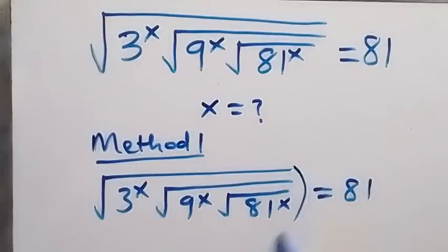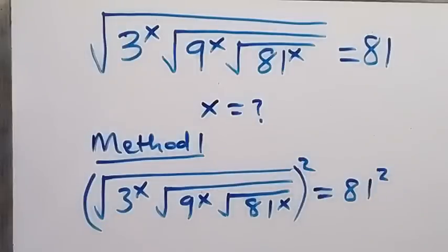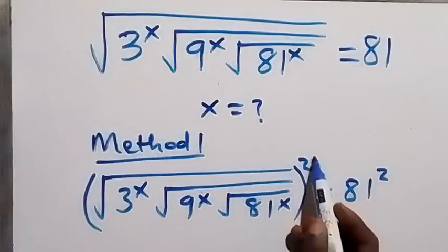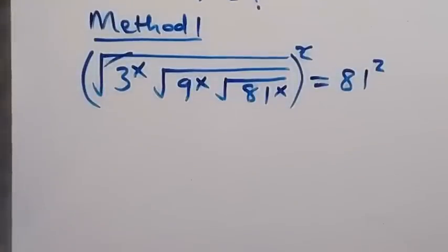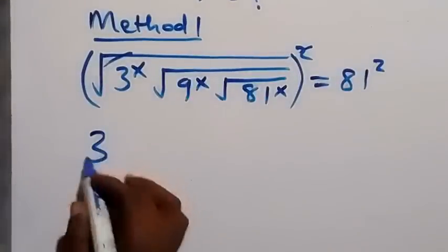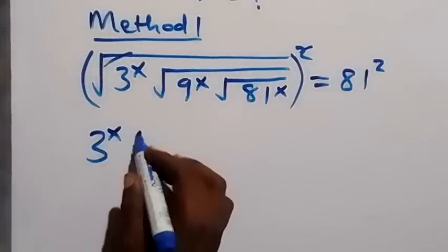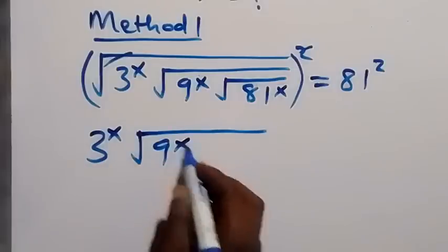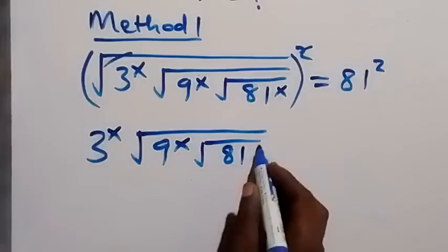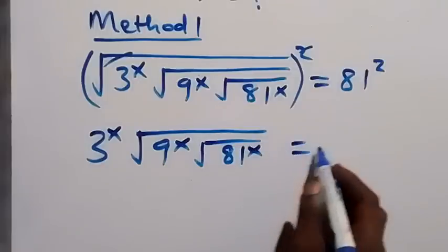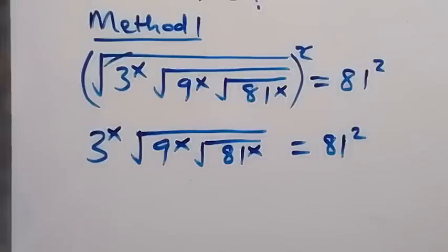For Method 1, let's square both sides. We square this side and we square this side. From this side, this square will remove the square roots, so this becomes 3 raised to power x, multiplied by square root of 9 raised to power x, then square root of 81 raised to power x, equals 81 squared.